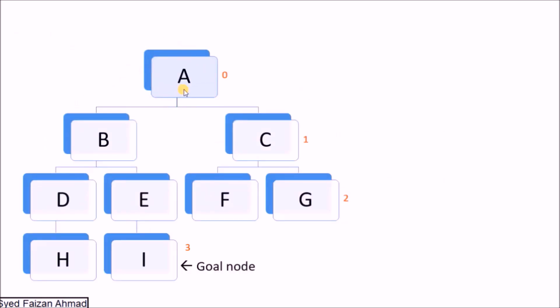This tree has a root node and I is the goal node. The root node level is 0, then level 1, then level 2, and last level 3.